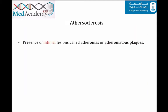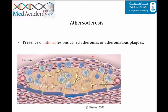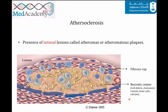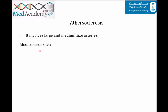Atherosclerosis is characterized by the presence of intimal lesions called atheromas or atheromatous plaques. These plaques protrude into and obstruct the vascular lumen and weaken the underlying media. This atheromatous plaque is composed of a necrotic center containing cell debris, cholesterol crystals, foam cells, and calcium, and covered by a fibrous cap.